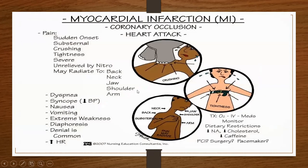What kind of symptoms do these patients usually have with myocardial infarction? They experience pain — a sudden onset, maybe substernal. Sometimes they describe it as feeling like an elephant is sitting on their chest: crushing, tightness, severe, unrelieved by nitroglycerin. It may radiate to the back, neck, jaw, shoulder, and arm.